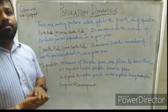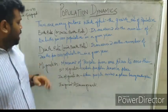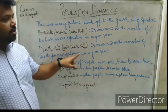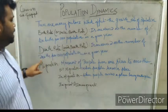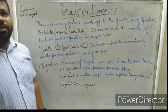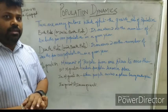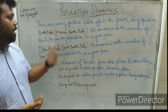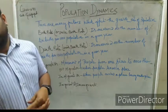Next comes death rate, or crude death rate. It is measured as the number of deaths per thousand population in a given year — meaning how many people are dying. If we know the birth rate and the death rate, then we can determine the growth rate of population.